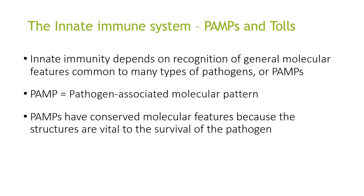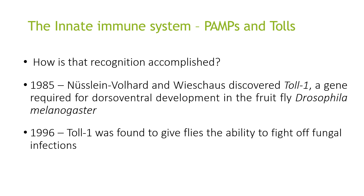The next component of the innate immune system involves pathogen-associated molecular patterns, or PAMPs. Innate immunity depends on recognition of general molecular features common to many types of pathogens. These PAMPs have conserved molecular features because the structures are vital to the survival of the pathogen. In 1985, Nüsslein-Volhard and Wieschaus discovered Toll, a gene required for dorsal-ventral development in the fruit fly Drosophila melanogaster.